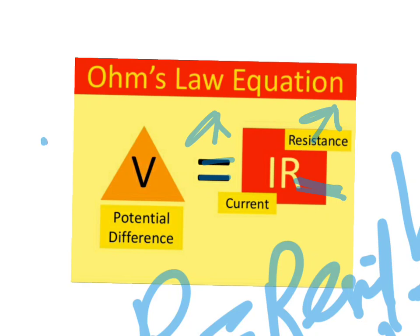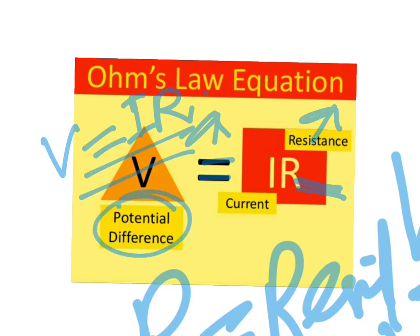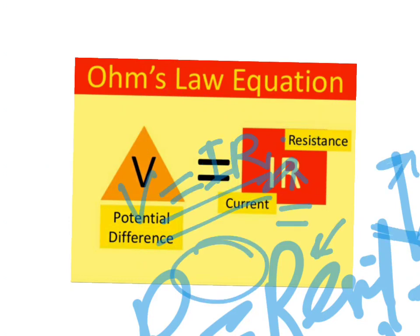V = IR is Ohm's law, where V is the potential difference or voltage, I is the current, and R is the resistance. This equation holds true only when other conditions like temperature and other physical properties of the conductor remain constant. If the temperature and other physical properties change, then V = IR will not hold true.